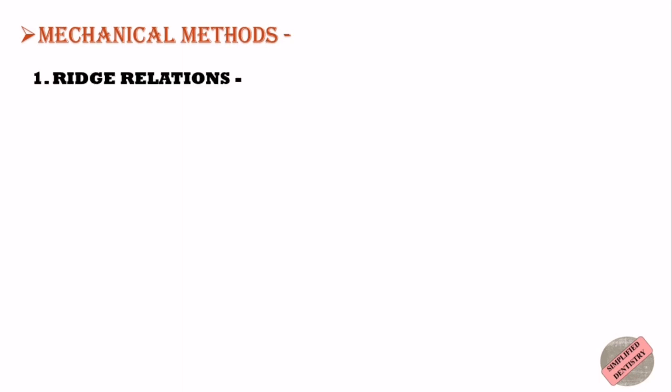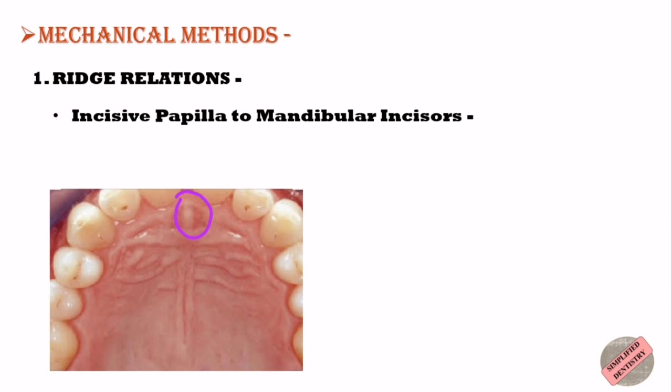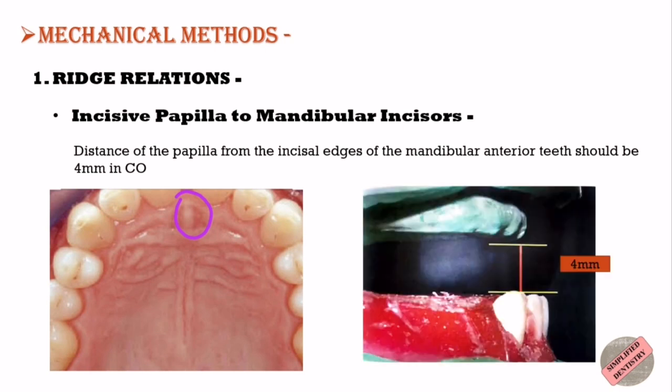Now let's look at the mechanical methods of measuring vertical dimension of occlusion. The first is ridge relations, which can be used in two ways: by measuring the distance of the incisive papilla from the mandibular anterior teeth, and by using ridge parallelism. The incisive papilla is a stable landmark whose position changes very little with resorption of the alveolar ridge. The distance of the papilla from the incisal edges of the mandibular anterior teeth should be approximately 4 mm on average in centric occlusion. This is a guide to verify vertical dimension and should be used with caution in patients with severe resorption.